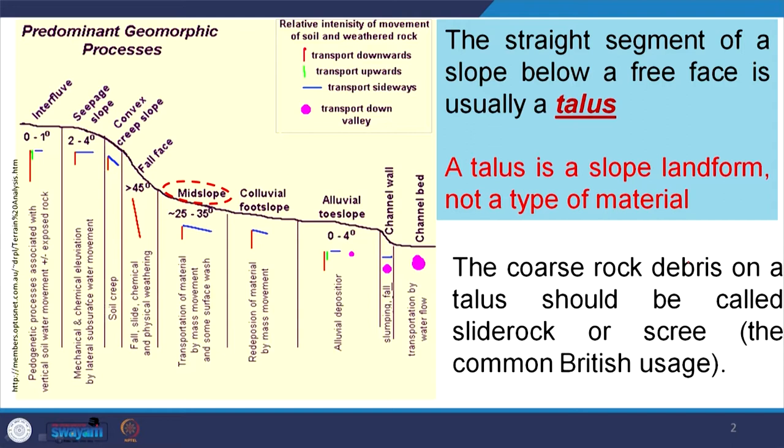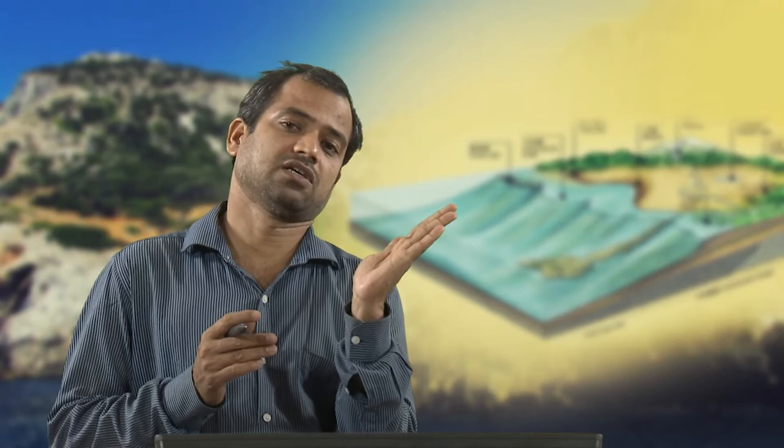The straight segment of this slope below a free face is called talus. Talus is a slope landform — it is not a material, which must be clarified because many times we make the mistake of thinking talus refers to weathered material, but that is not true. Talus is a slope landform. The coarse rock debris on a talus should be called slide rock or scree — the material accumulated on the talus slope surface.